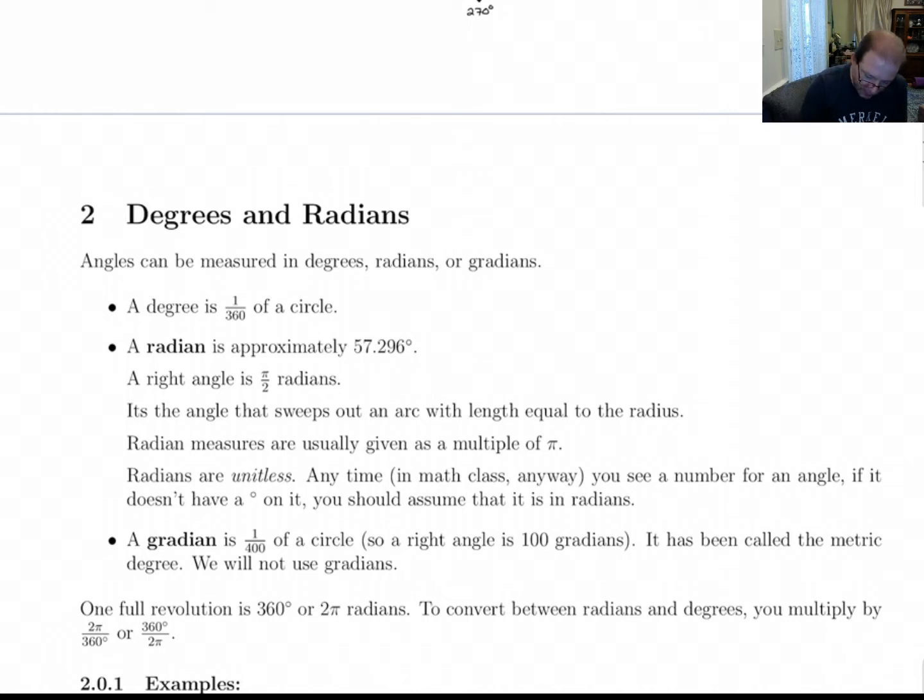A radian—people don't usually talk about like one radian or two radians or whatever. Radians are usually given as multiples of π. But if you did pull out and just say what's an angle of one radian look like, one radian is approximately 57.296 degrees. Now here's why it's defined like that. It's defined that way to make a right angle π/2 and to make a full revolution 2π radians.